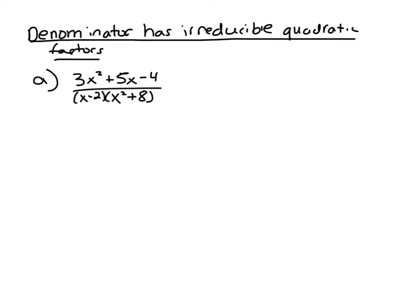In this video, we're going to talk about partial fraction decomposition when you have an irreducible quadratic factor. So this one, x minus 2, is the same as in previous videos, but x squared plus 8 is something that we can't factor. So that's the irreducible quadratic factor.